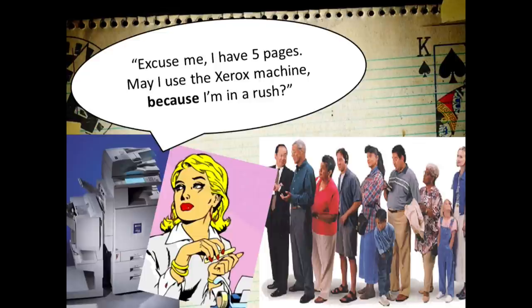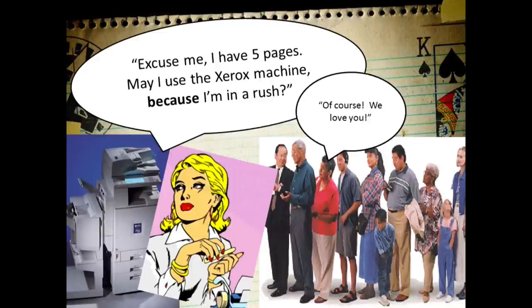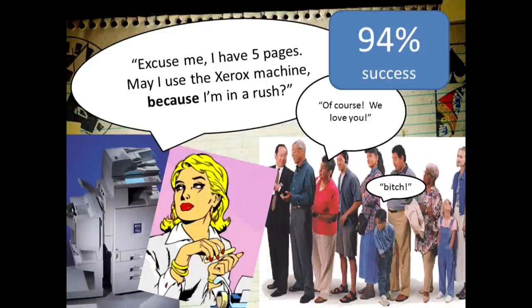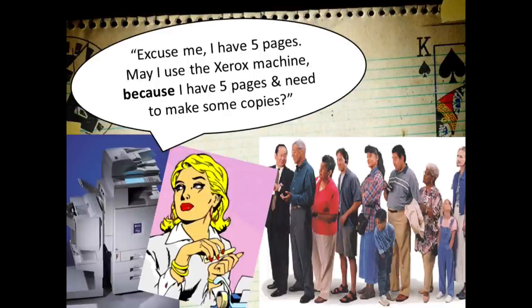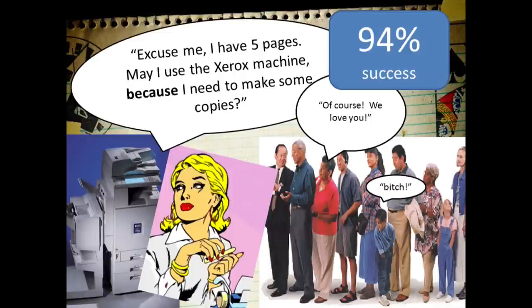They went a step further — they also had her say: 'Excuse me, I have five pages, can I use the Xerox machine because I'm in a rush?' That little addition of 'because I'm in a rush' caused it to jump to 94% success. You might think she gave a reason and people evaluated it and decided it was good — turns out that's not the case. The magic word is 'because.' As long as she said 'because,' people didn't even pay attention to what came next. She even said nonsense: 'Excuse me, I have five pages, can I use the Xerox machine because I have five pages' — 94%, straight to the front of the line.